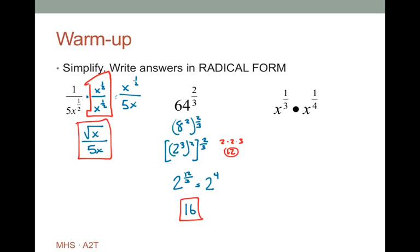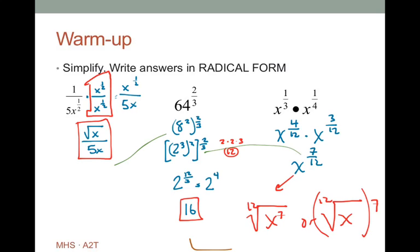Go back and think about that and make sure you can reduce that fraction to 16 — you might have found another technique. Finally, x to the one-third times x to the one-fourth: I've got to change those into fractions with common denominators. So x to the four-twelfths times x to the three-twelfths gives me x to the seven-twelfths, which is the twelfth root of x to the seventh.